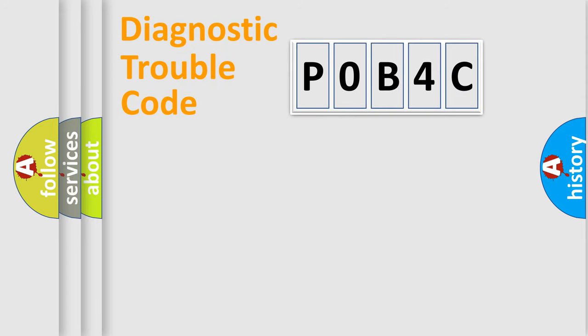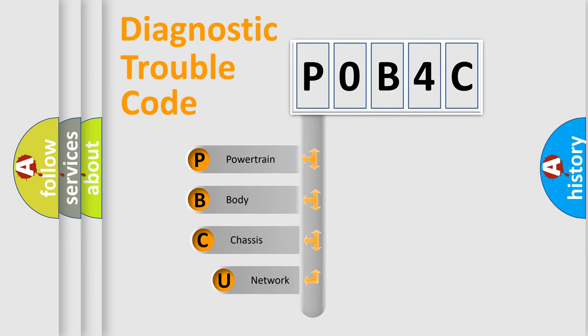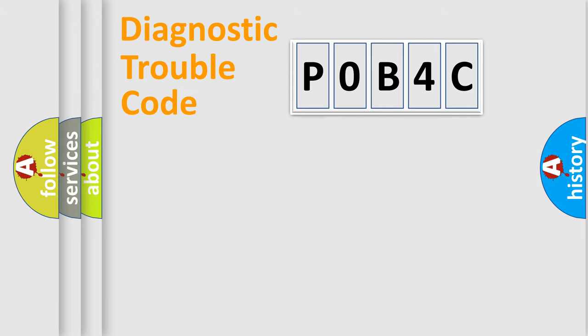Let's do this. First, let's look at the history of diagnostic fault code composition according to the OBD2 protocol, which is unified for all automakers since 2000. We divide the electric system of an automobile into four basic units: powertrain, body, chassis, and network.